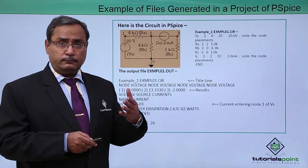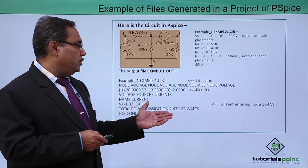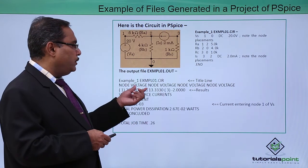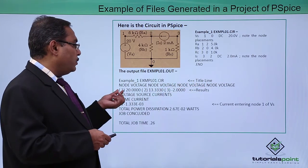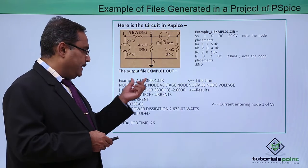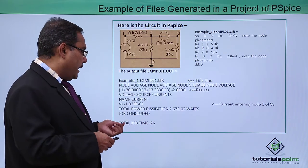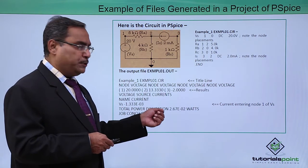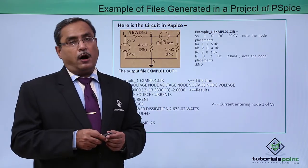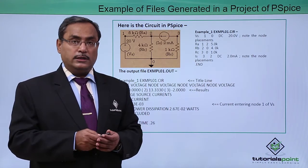When this file gets simulated, the output file will be generated. Here is a sample output file. If we simulate this circuit, the output file will show node voltages — at node 1, 2, and 3 respectively. You can also find out what current is flowing, what the voltages at different nodes are, the total job time required, and the total power dissipation. Everything will be in this output file. You can open it, take a print, and get an understanding of the circuit simulation parameters.